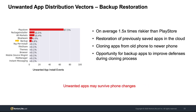Moving on, we see another very surprising distribution vector: backup restoration, responsible for almost 5% of all unwanted app installations in the dataset. These are installations that typically happen when users clone apps from an old phone to a newer one, but they also show us that unwanted apps may survive full device changes, which is quite surprising. This also highlights the opportunity for backup apps to improve defenses against unwanted apps during the cloning process.